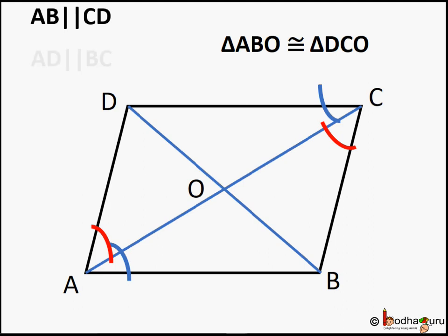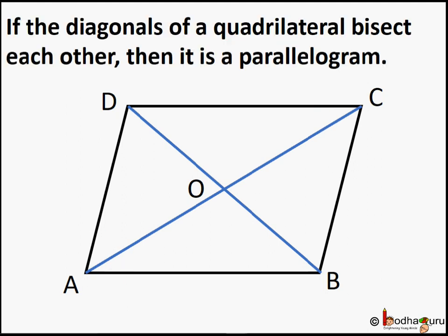So we get that opposite sides are parallel, which means ABCD is a parallelogram. Hence we can say if the diagonals of a quadrilateral bisect each other, then it is a parallelogram.